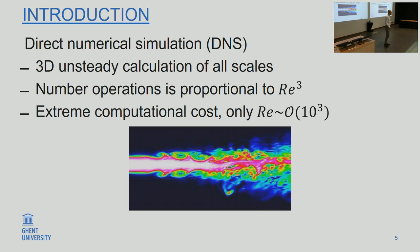In a DNS, the number of operations scales with the third power of the Reynolds number due to grid refinement and time-step requirements. This means you can only afford relatively low Reynolds numbers — of the order of a thousand or maybe a couple of thousand — because otherwise the computational cost is too high, even for very big supercomputers. Reynolds numbers of this order of magnitude are not yet applicable in most industrial applications. For instance, the flight of an aircraft has a Reynolds number of the order of a million, which is way too large to do a DNS.